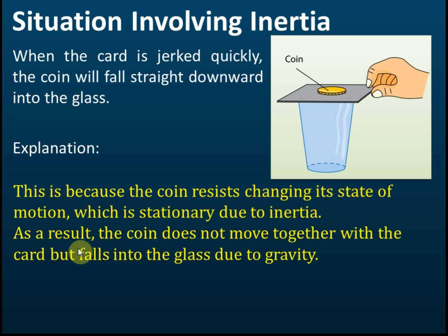As a result, the coin does not move together with the card but falls into the glass due to gravity. Jerking the card tries to make the coin move, but because of inertia the coin resists and remains in place. After the card is removed, nothing supports the coin, so owing to the pull of gravity, the coin falls down. That's the explanation. Let's look at another situation.